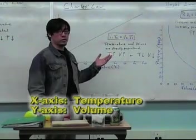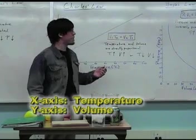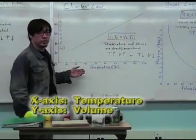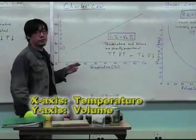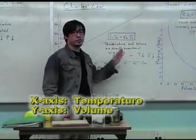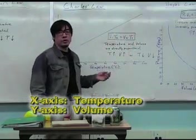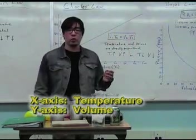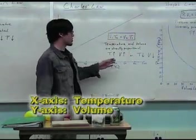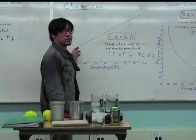If we were to look at Charles law on a graph, you see you have two variables here, temperature and volume. As the temperature increases, so does the volume, showing that it's a direct relationship. Or, conversely, if the temperature goes down, getting colder, the volume would decrease.